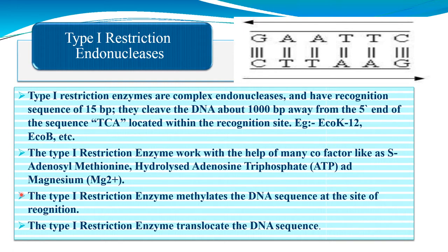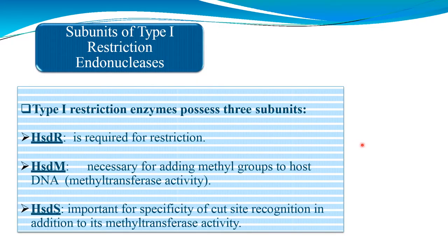Type 1 restriction enzymes methylate the DNA sequence at the site of recognition and translocate the DNA sequence. The subunits involved are: HsdR, required for restriction; HsdM, necessary for adding methyl groups to host DNA (methyltransferase activity); and HsdS, important for specificity of cut site recognition, in addition to its methyltransferase activity.